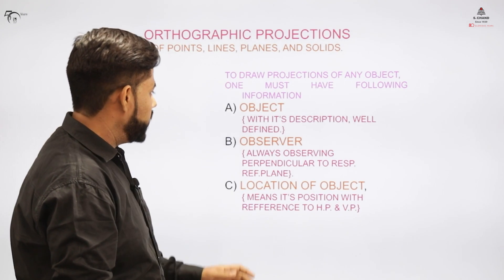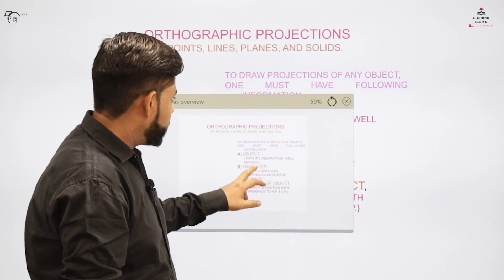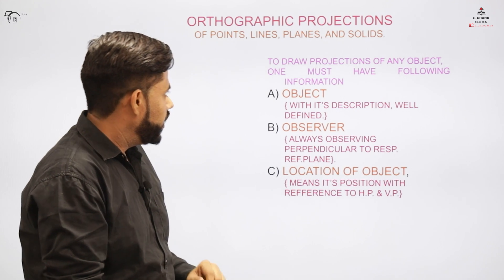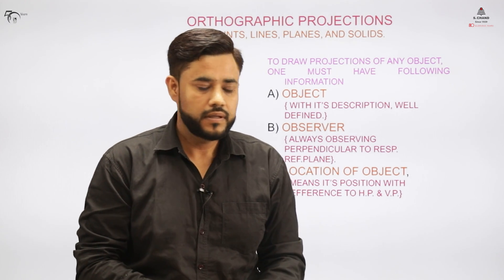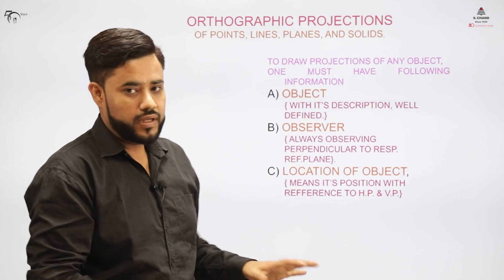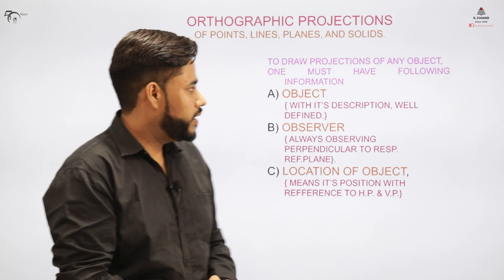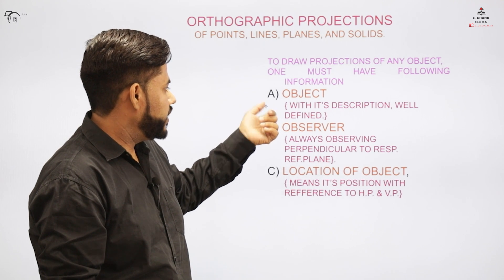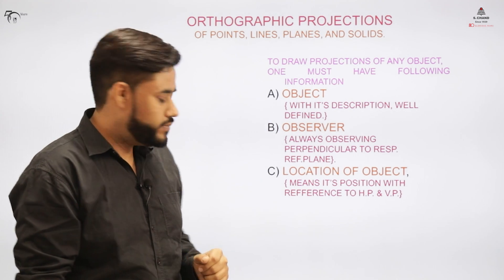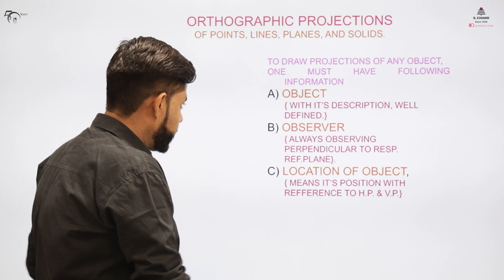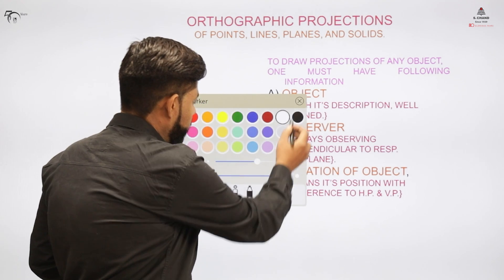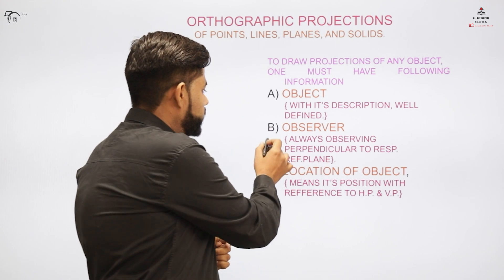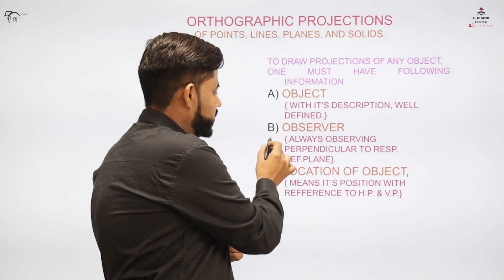Now coming to the concept, the orthographic projection situation consists of certain parts which would be given in the question to you. You would be given certain information like the object, the general description of the object. For instance, you have a sphere.